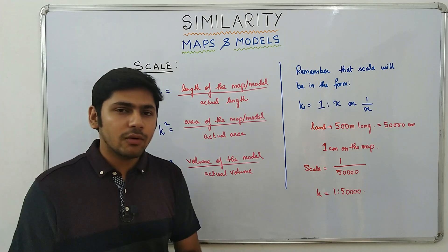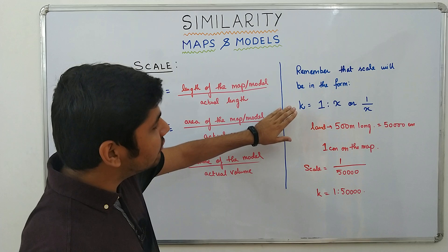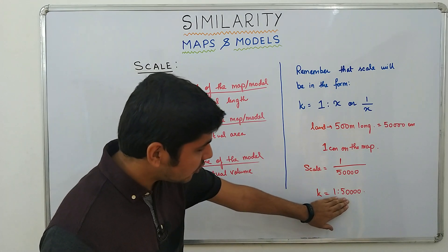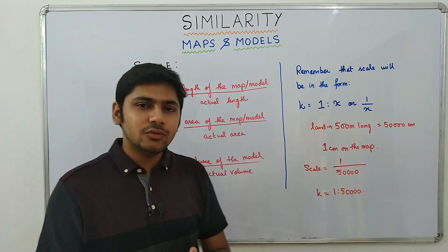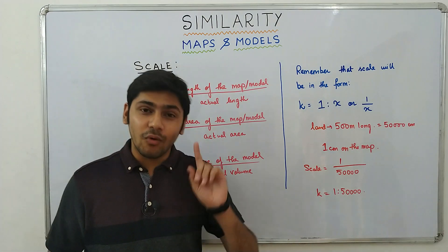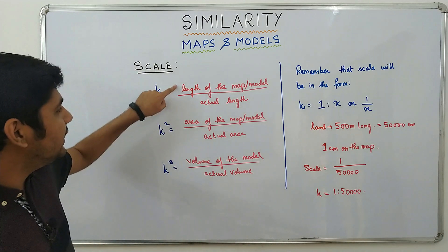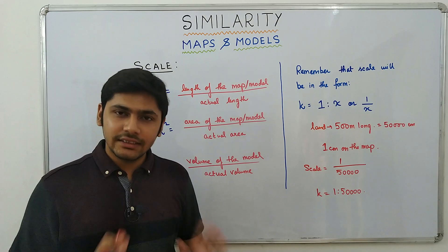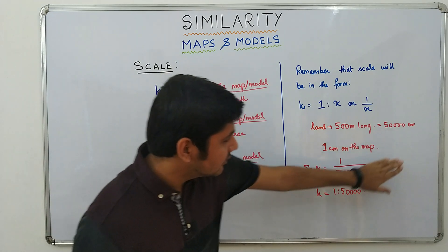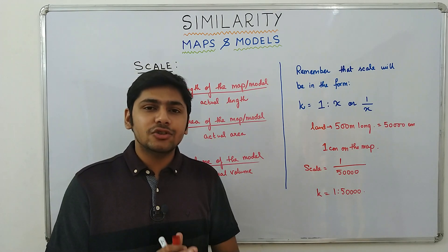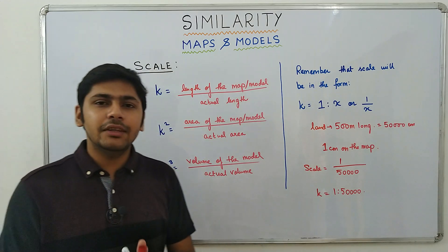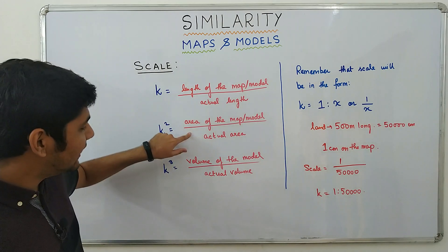You also need to remember that the scale will be given in the form K = 1 : X or 1/X, like K = 1 : 50,000 or 1/50,000 — both mean the same thing, and this is what will appear in your question paper. Also, whenever you are doing these calculations, you must keep the units the same. For example, I had 500 meters but I converted to centimeters so both sides are in centimeters. If the units are not the same, your answer will be wrong — so keep this in mind whether you are working with length, area, or volume.